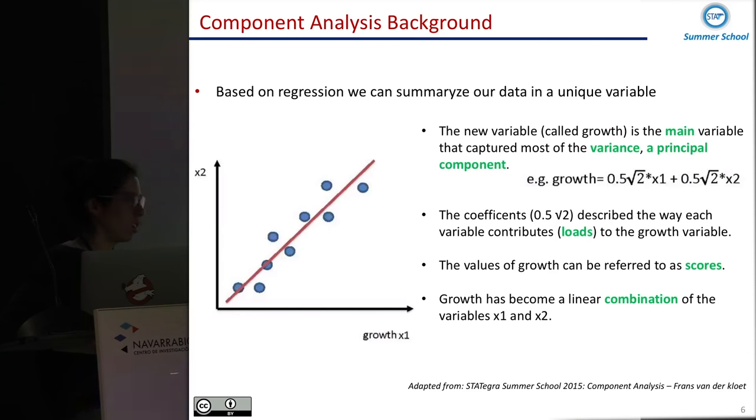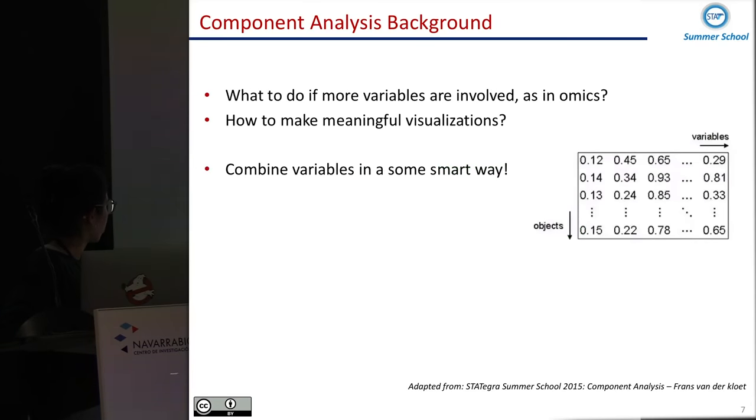And basically the growth is the linear combination of these two variables. But what to do if we have more than two variables? Like in omics, we have a very large number of variables or features: genes, species size, etc.